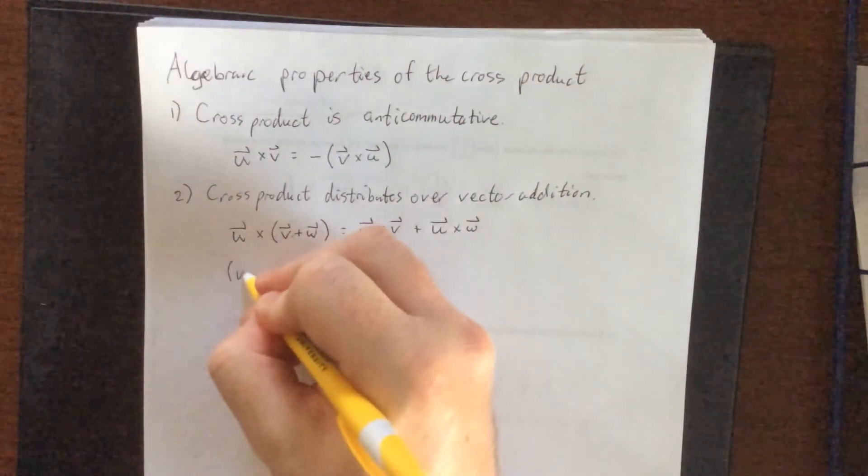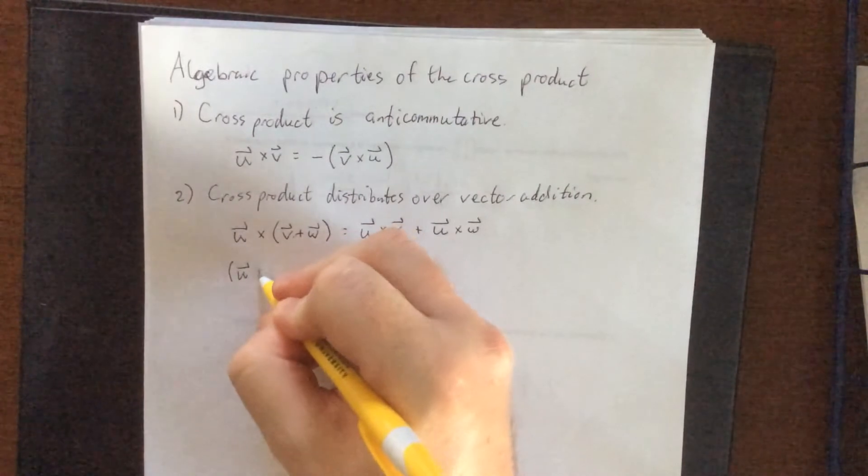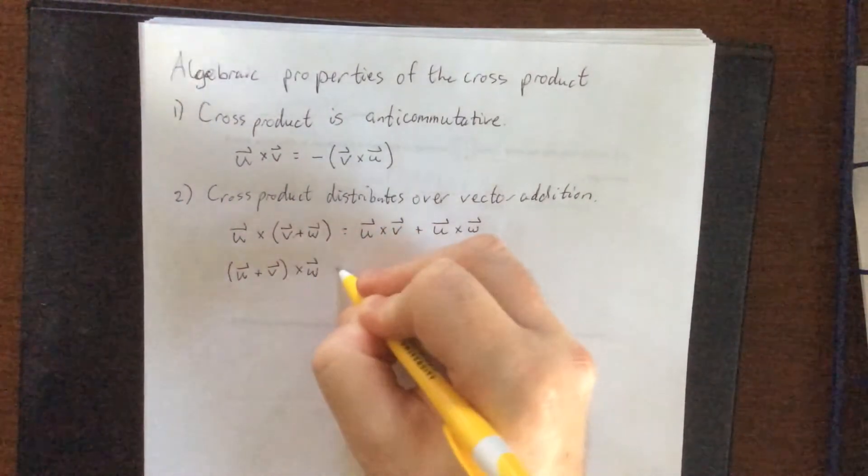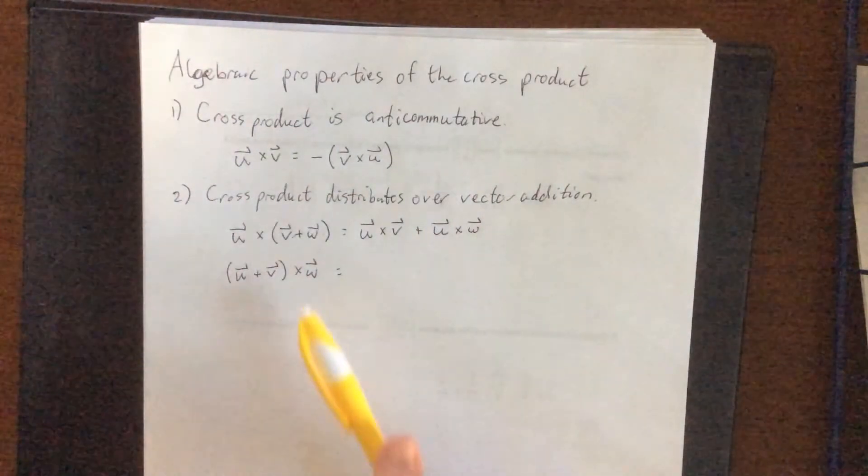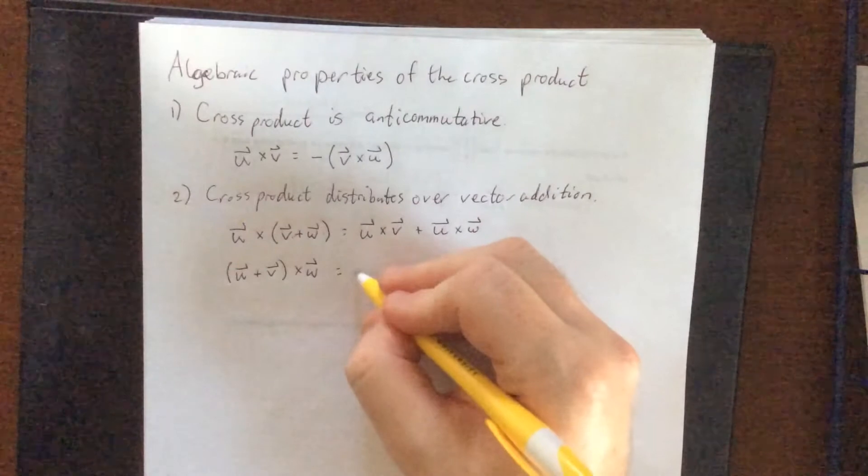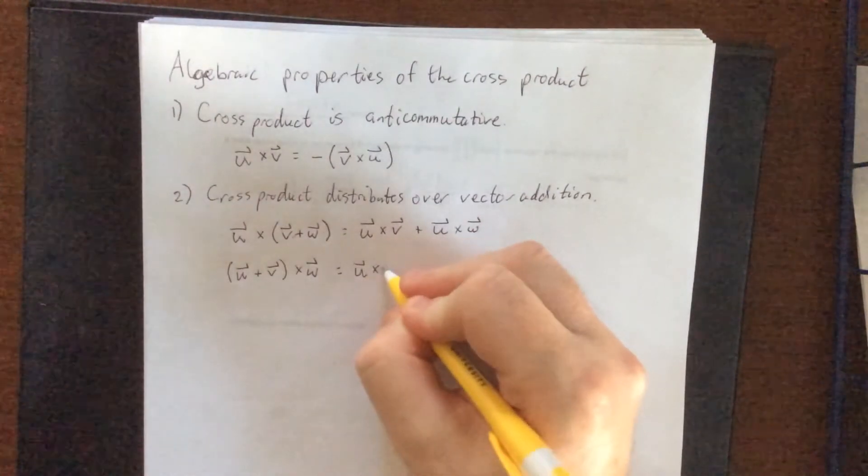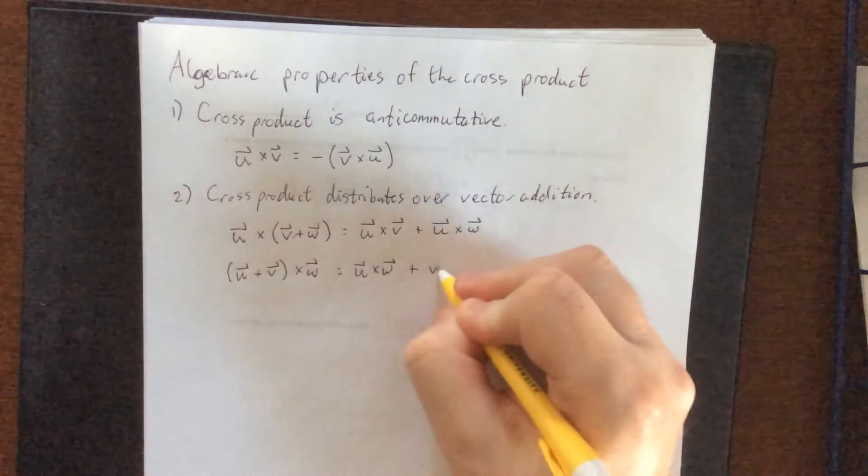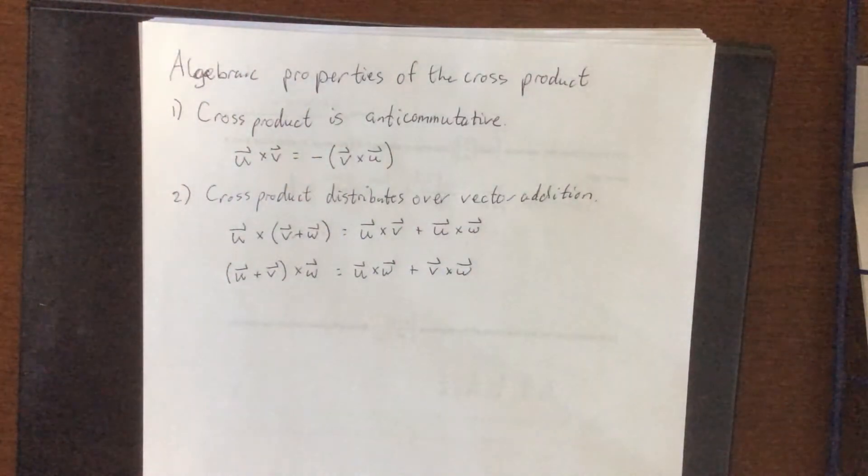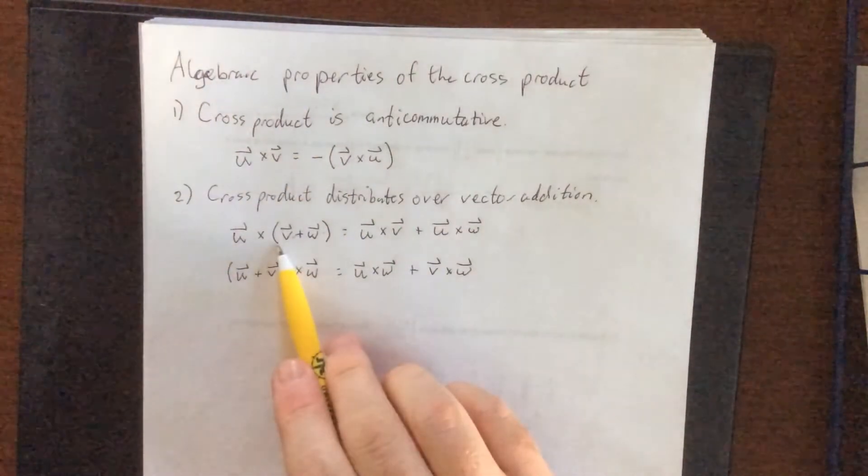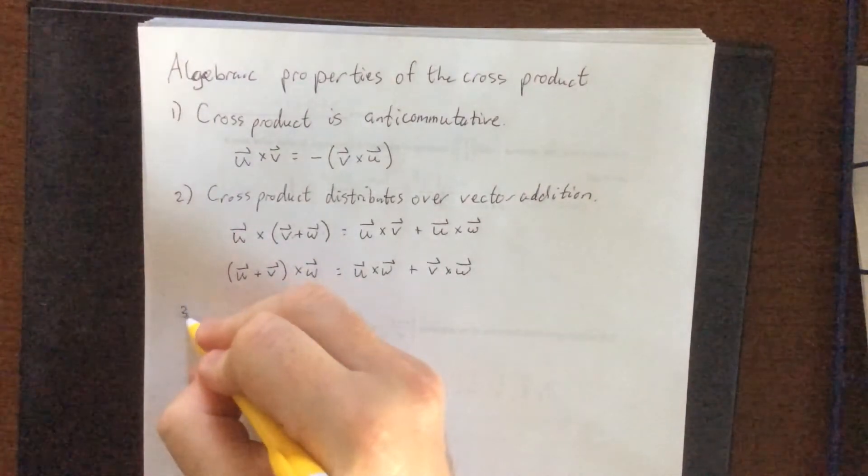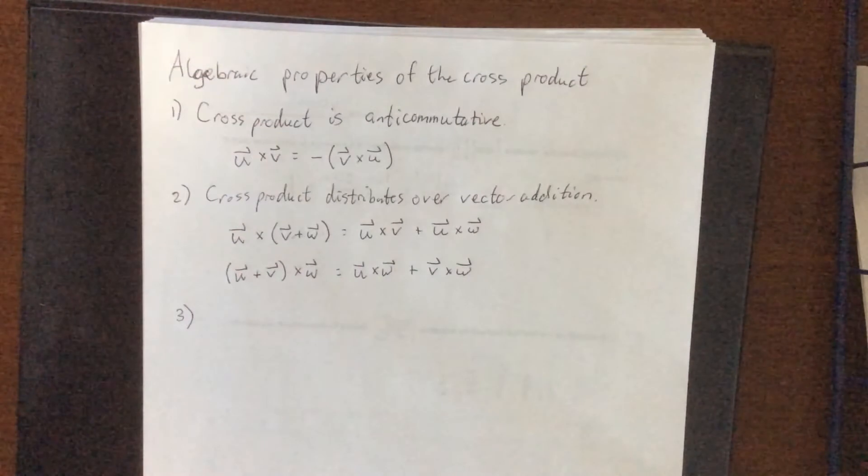That also means that if I were to reverse this a little bit and say u plus v cross w, the distributive property is going to work the same way. w should be on the right side of both the u and the v. So this would be u cross w plus v cross w. We also refer to this as being left distributive and right distributive any time the commutative property is not necessarily intact.